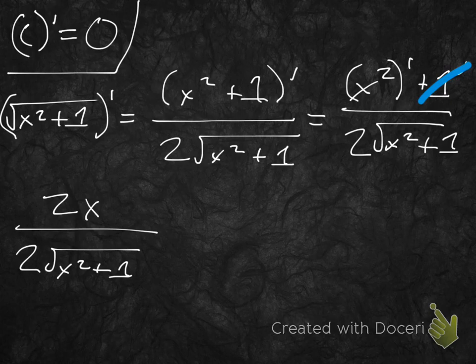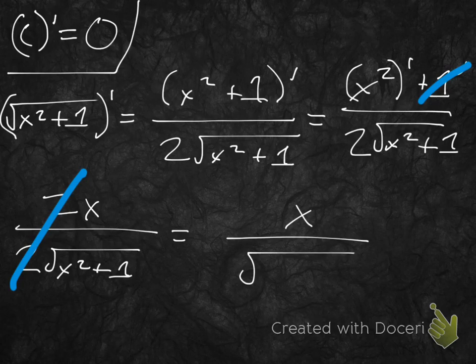And all right, what step do you see that we can do now? Well, how about let's just kill these 2s, because 2x over 2 times x squared plus 1, we can just get rid of them. Let's cancel out. So this is going to leave us now with x over radical x squared plus 1.